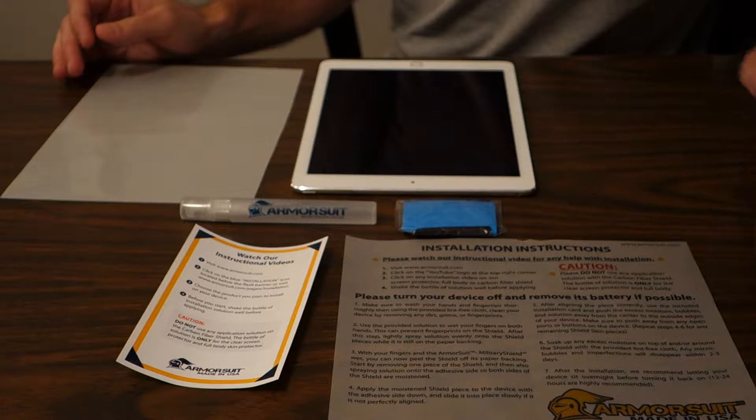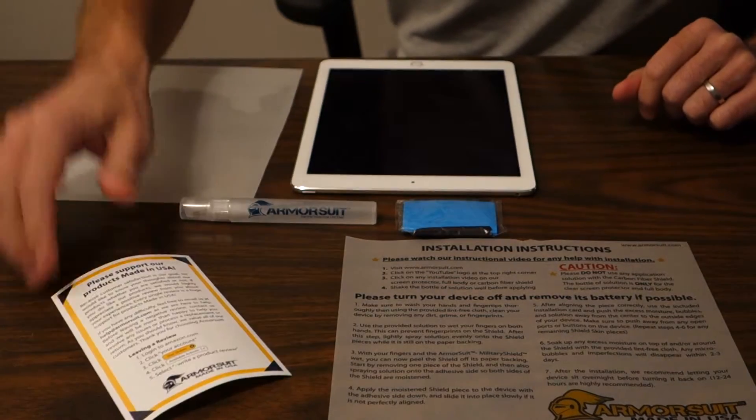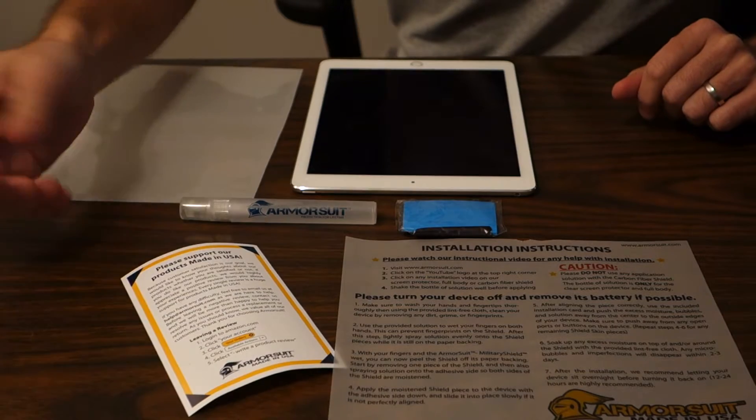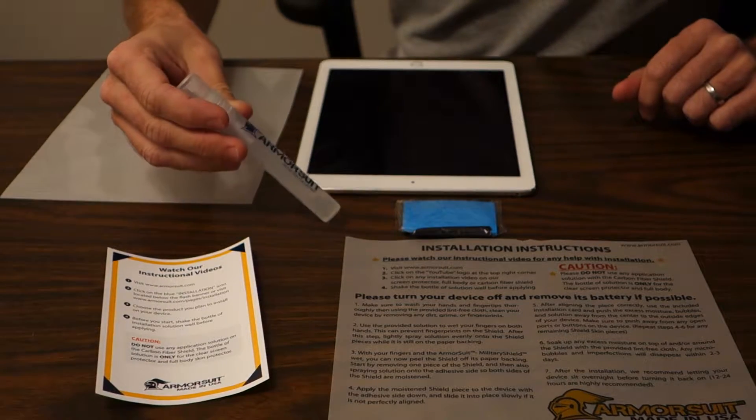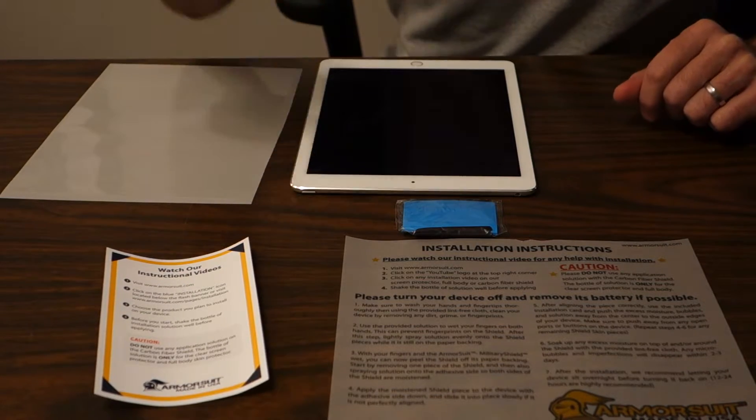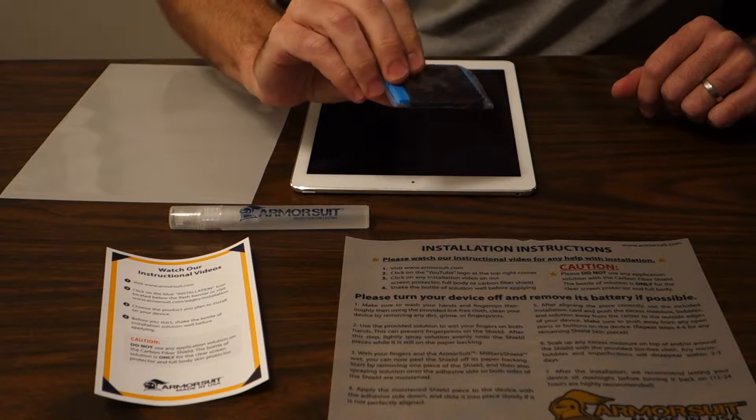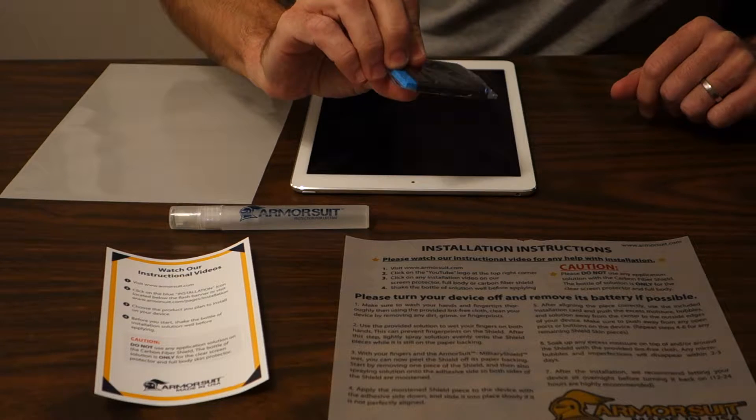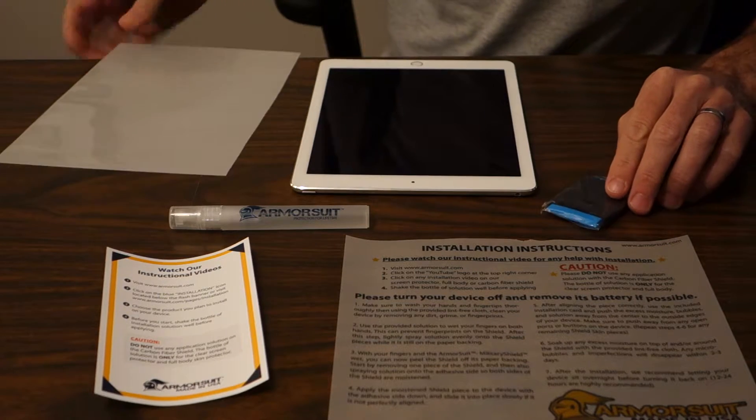It comes with this little card that says to watch the video. Products made in USA, which I think is cool. It comes with this little spray bottle of application spray that says to shake it before applying, and there's a lint-free cloth and a little squeegee in there, and then the actual shield itself.